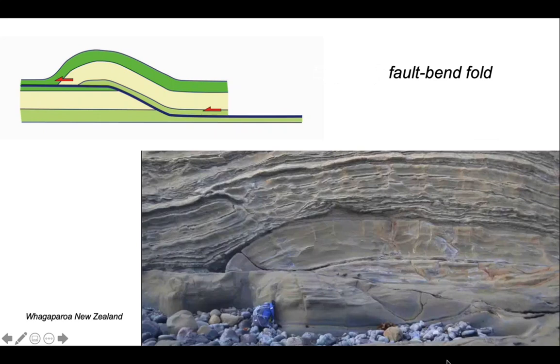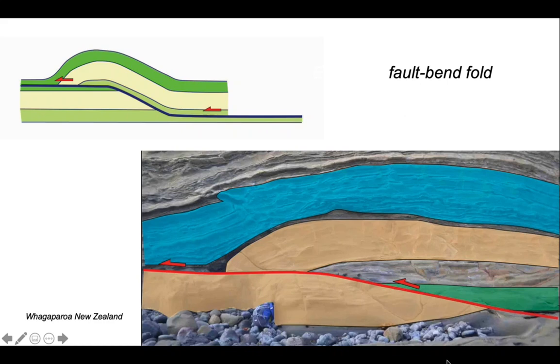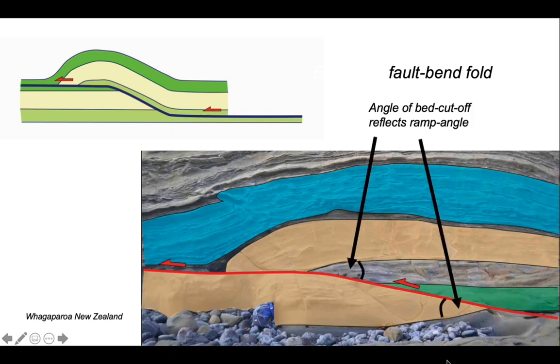Here's an example of one of these structures in nature from New Zealand. Add the interpretation and we can see that we've created a fold in the hanging wall as the rocks come down against the fault plane. A critical feature of fault bend folding is that the geometry of the fold in the hanging wall mimics that in the foot wall. And consequently, the cut off angle of bedding in the foot wall more or less matches that in the hanging wall. These angles are the same.